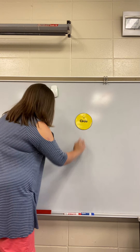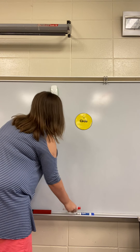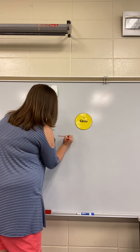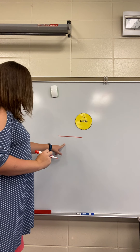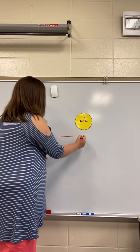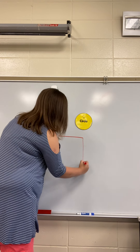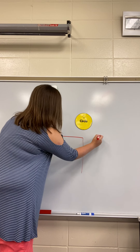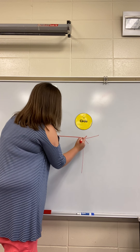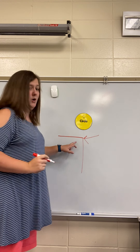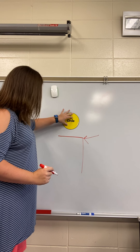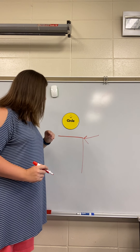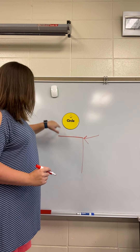A circle does not have any straight lines. It does not have any corners or points. A circle is flat.